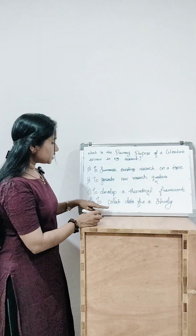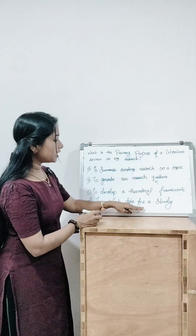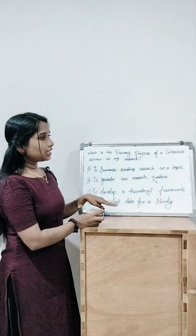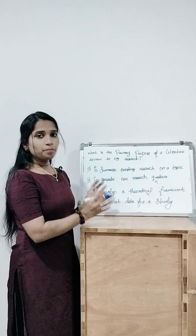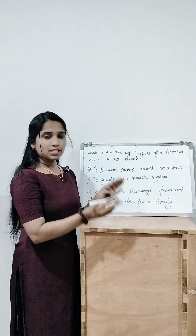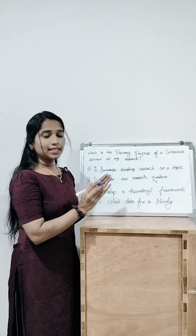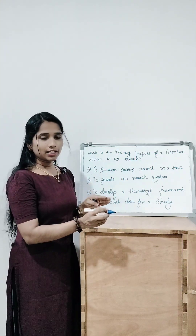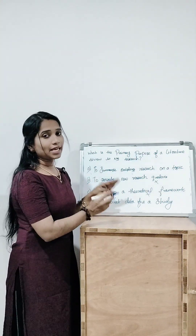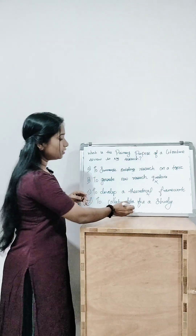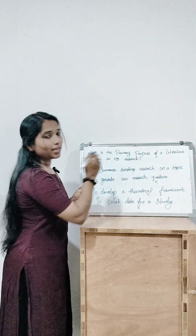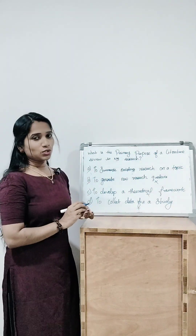Option D is to collect data for a study. Data collection means we are collecting information from subjects, which is entirely different from review of literature. So we can exclude this option as well.